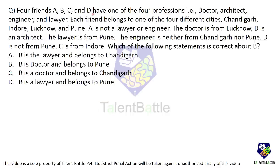Four friends A, B, C, and D each have one of four professions: doctor, architect, engineer, and lawyer. Each belongs to one of four cities: Chandigarh, Indore, Lucknow, and Pune. Given clues: A is not a lawyer or engineer; the doctor is from Lucknow; D is an architect; the lawyer is from Pune; the engineer is neither from Chandigarh nor Pune; D is not from Pune; C is from Indore. Which statement is correct about B?